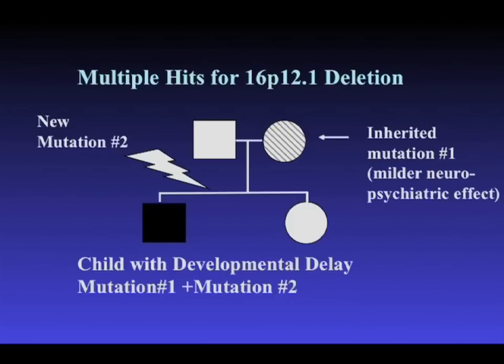This was completely consistent with the idea that one hit may be sufficient to result in a milder phenotype — a neuropsychiatric condition — but two hits were required to produce a child with developmental delay. We called this the two-hit model, though we now refer to it as the second-site model: two different loci in heterozygous state found in different chromosomal regions. The model goes: one parent with perhaps a neuropsychiatric condition transmits one event; another mutation occurs in the child; two mutations compound to result in a severe outcome, in this case developmental delay.